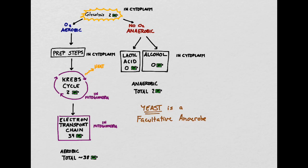Yeast is what we call a facultative anaerobe. It has the ability to alternate back and forth between aerobic and anaerobic respiration depending on the conditions. This means that yeast can still respirate regardless of whether or not there is oxygen present. However, aerobic respiration is much more efficient at generating ATP — it can generate approximately 38 ATP, whereas anaerobic respiration can only generate the two ATP made during glycolysis.